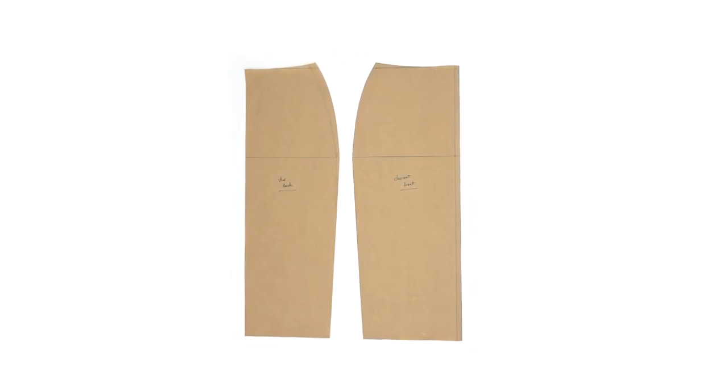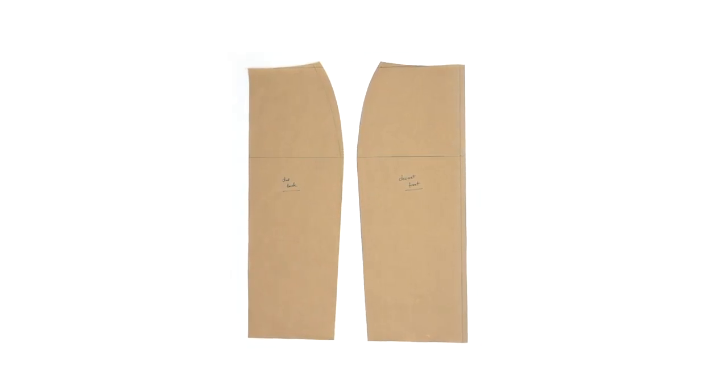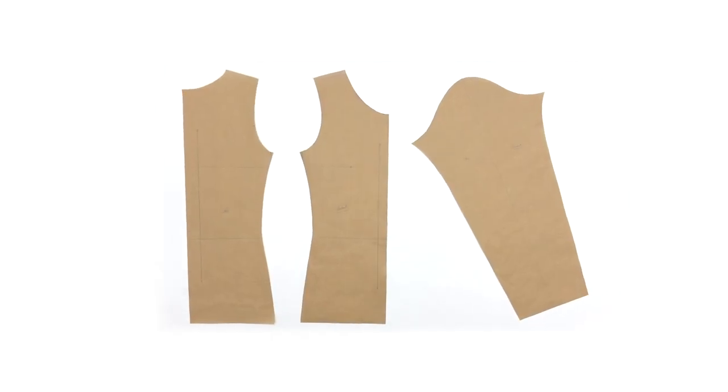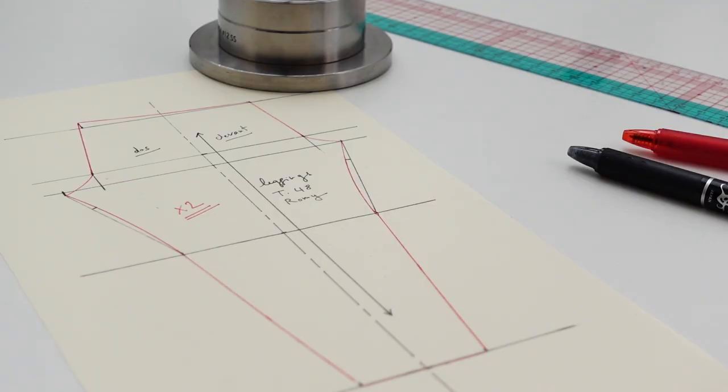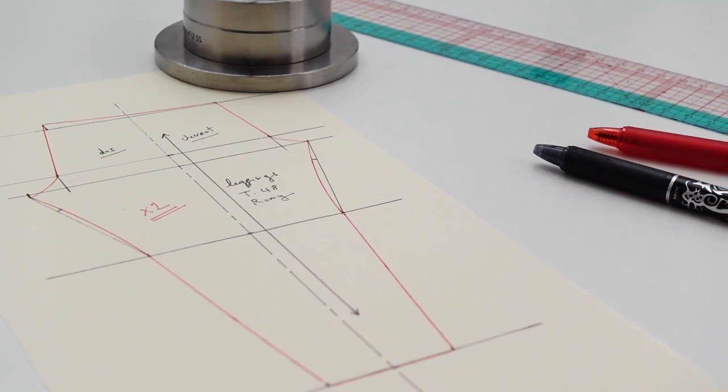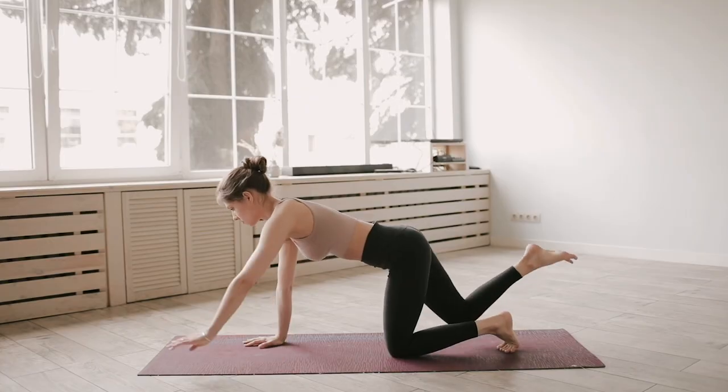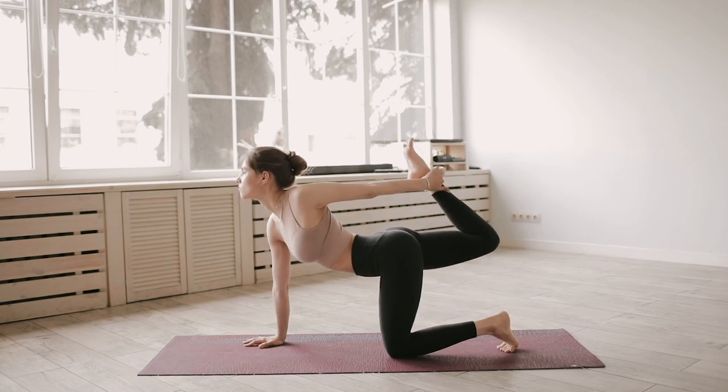Hi everyone and welcome back for this third tutorial dedicated to flat pattern making for knit fabrics. In the first two episodes we have learned how to trace the basic blocks for a knit skirt, bodice and sleeve. Today we are going to learn how to trace the basic legging block in one piece without side seams.